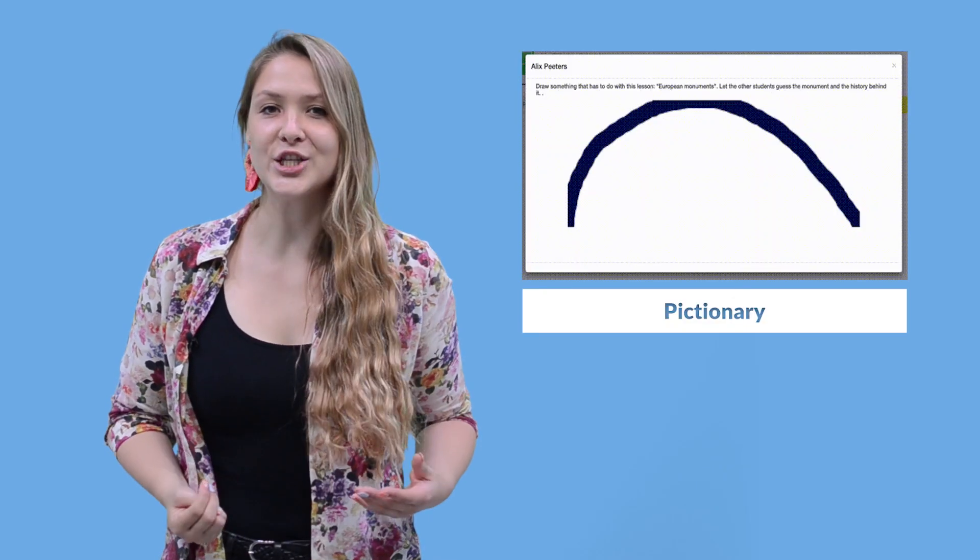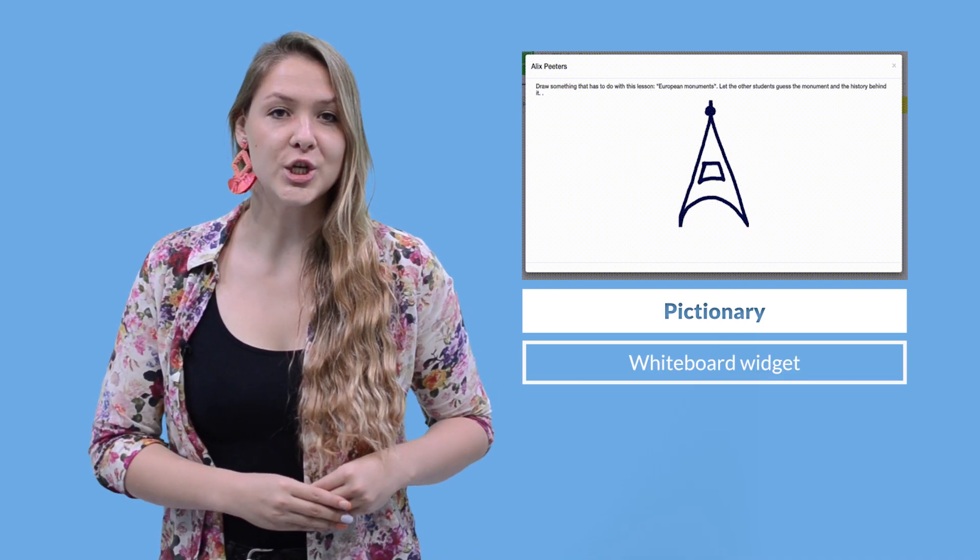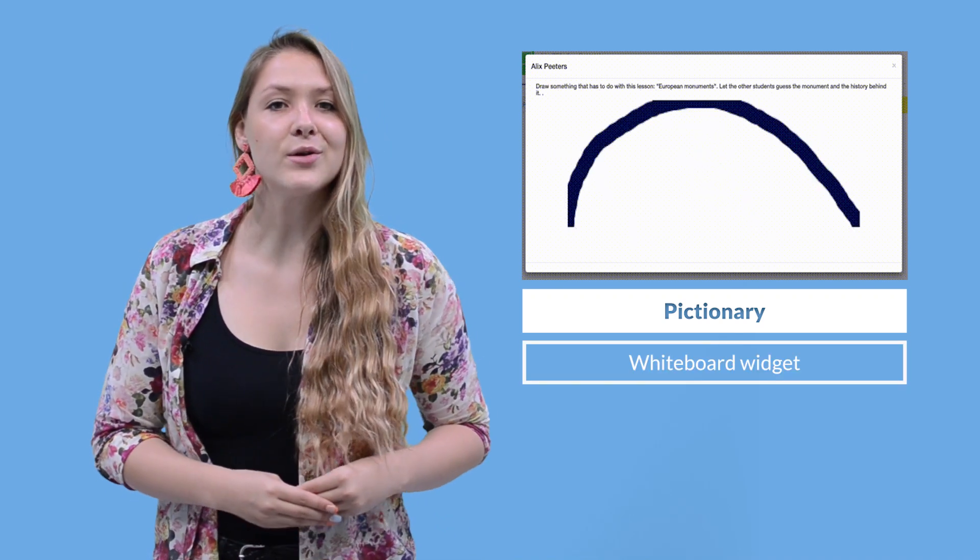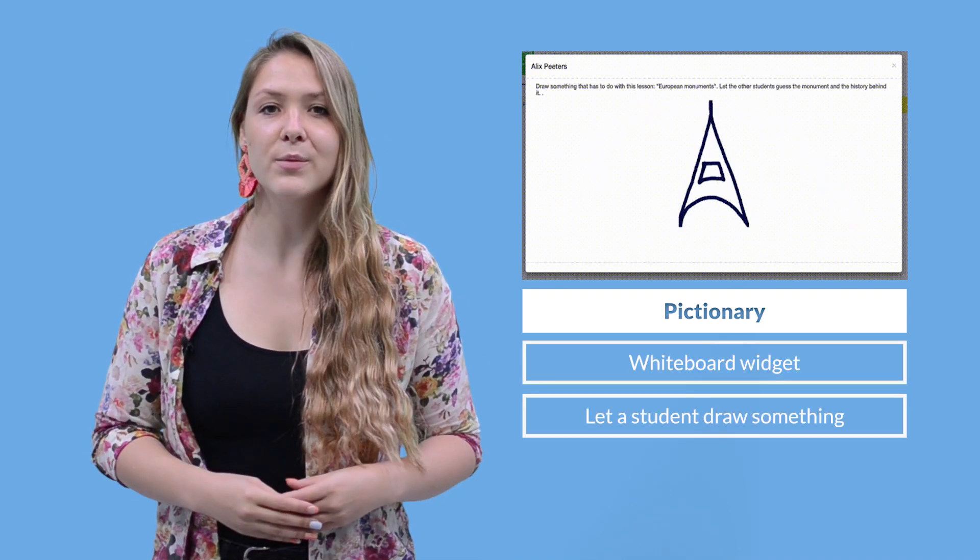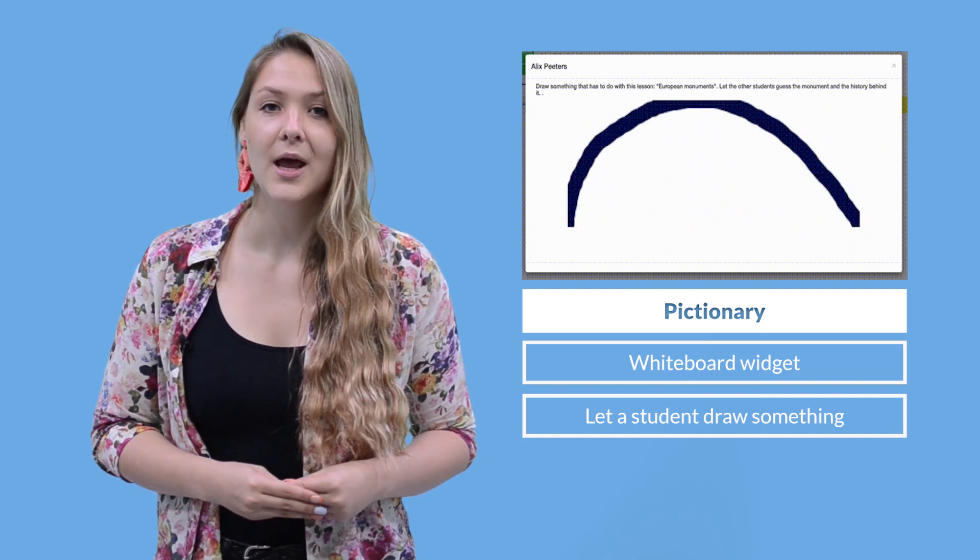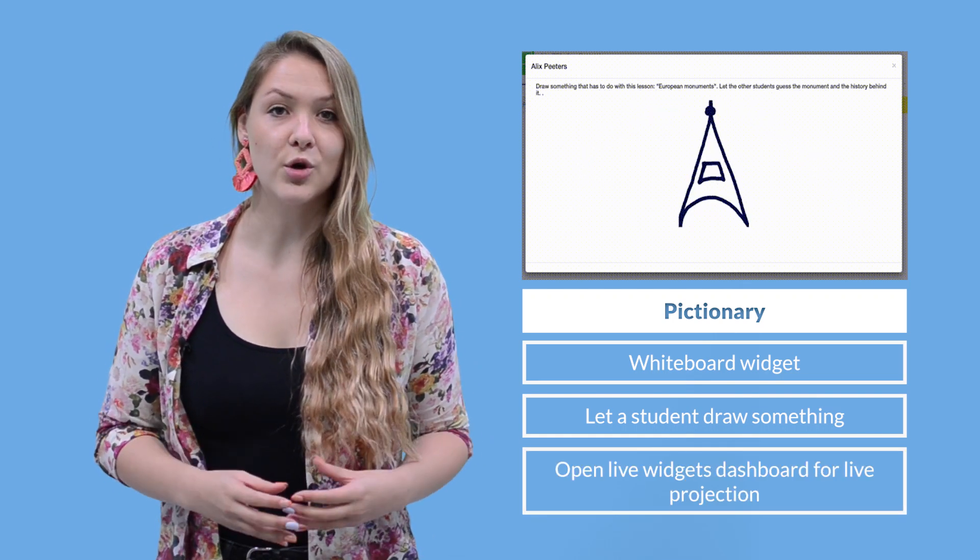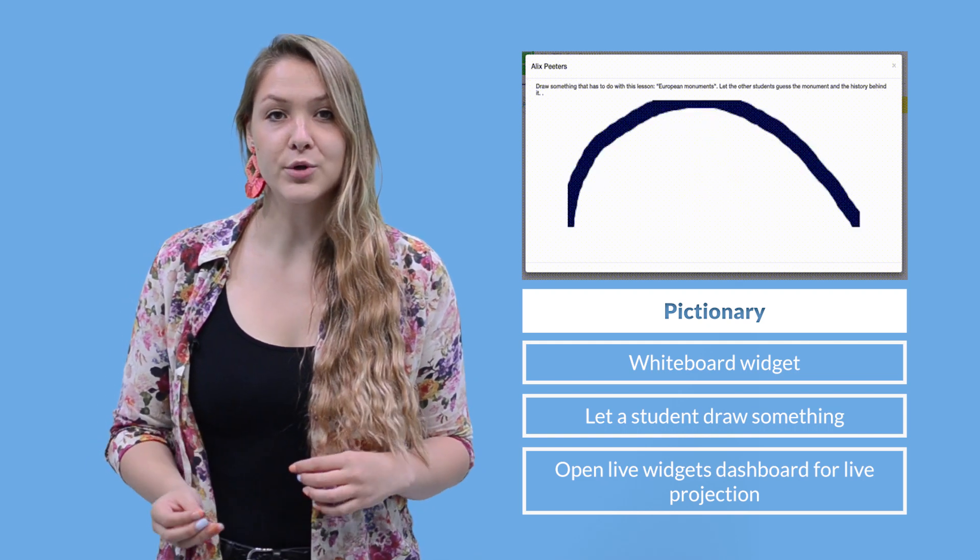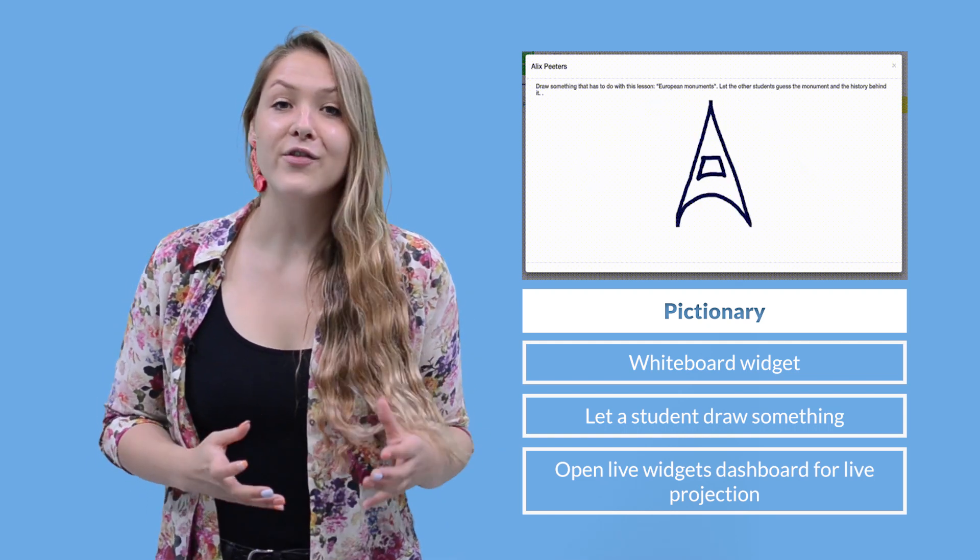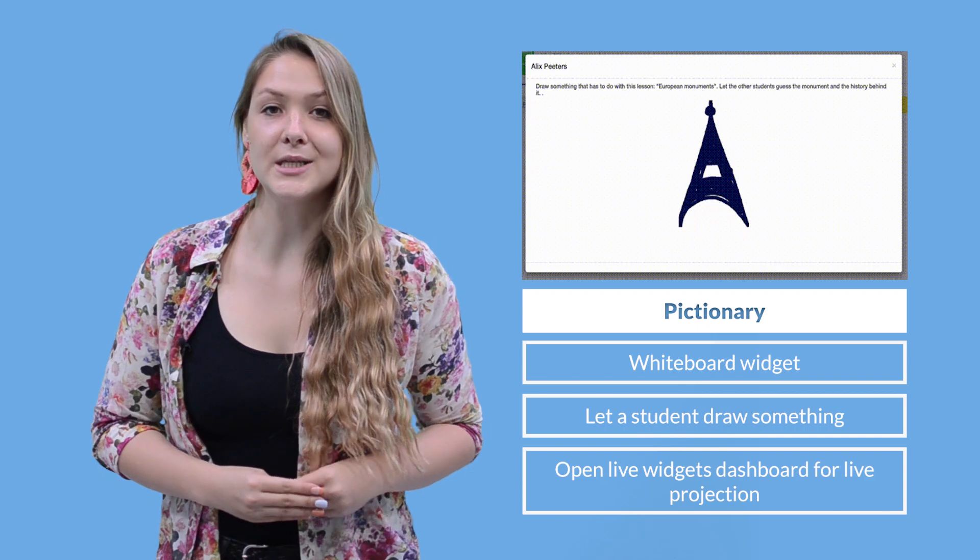Two, Pictionary. Assign a whiteboard widget in Google Classroom. Pick out a student and tell them to draw something about a current lesson. Open Live Widgets dashboard to see them draw live and share the dashboard on the classroom screen so everybody can see what that student is drawing.